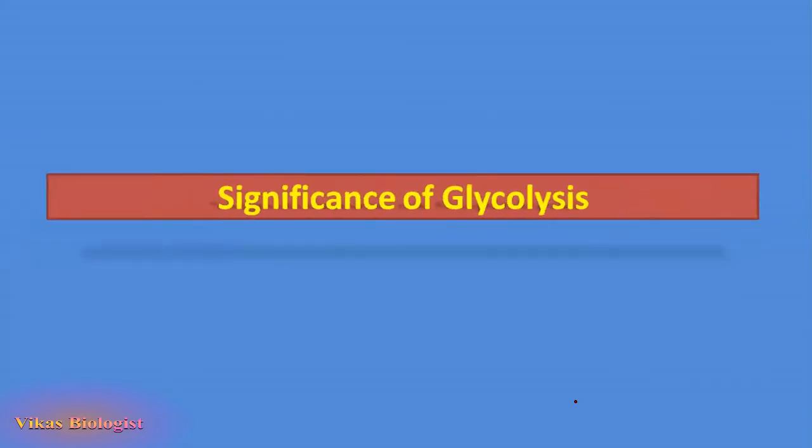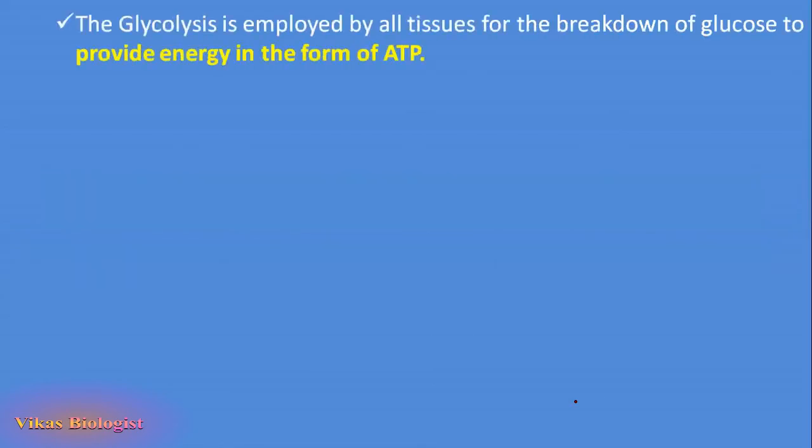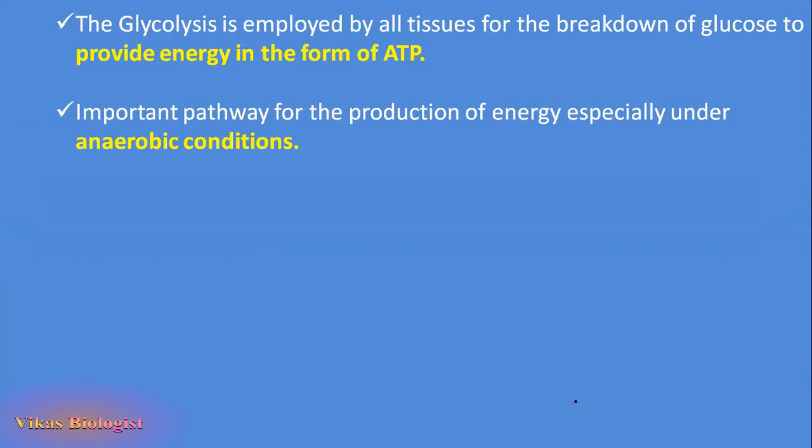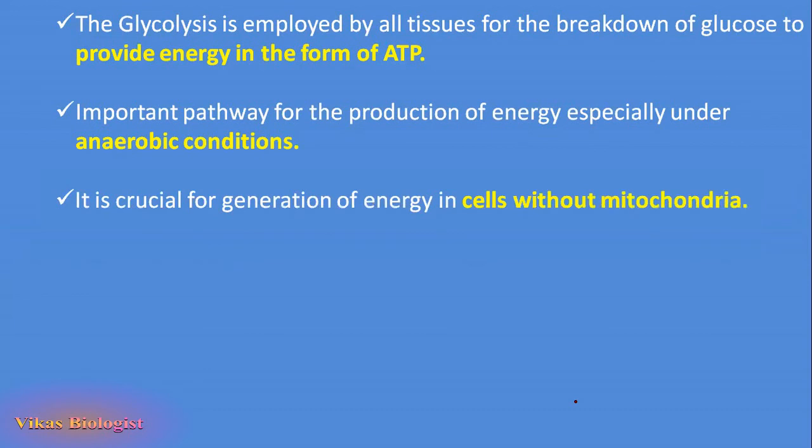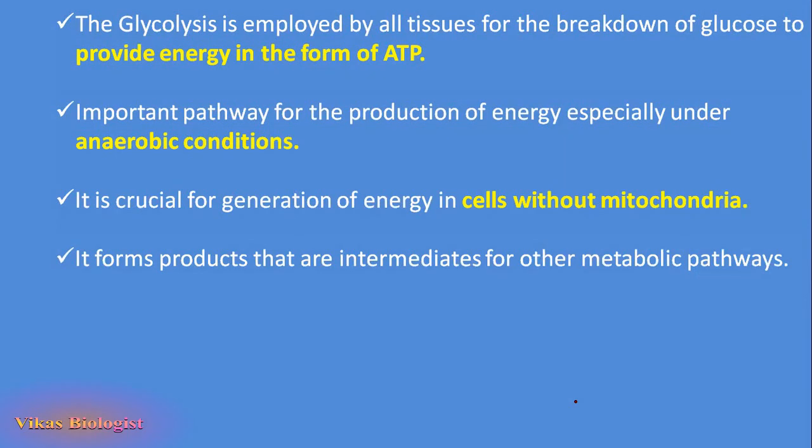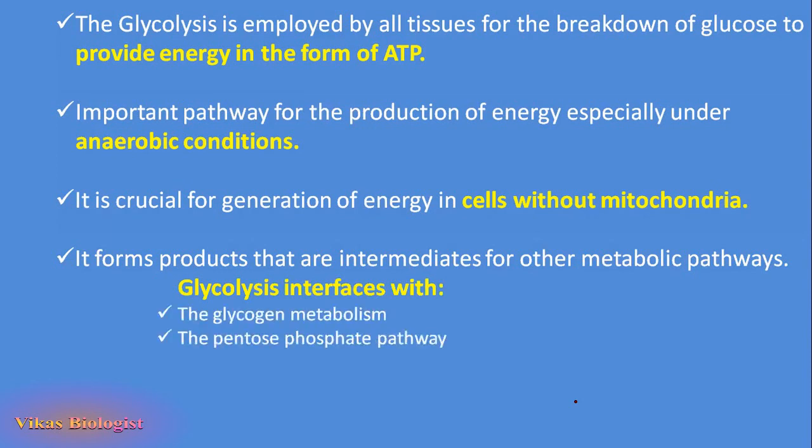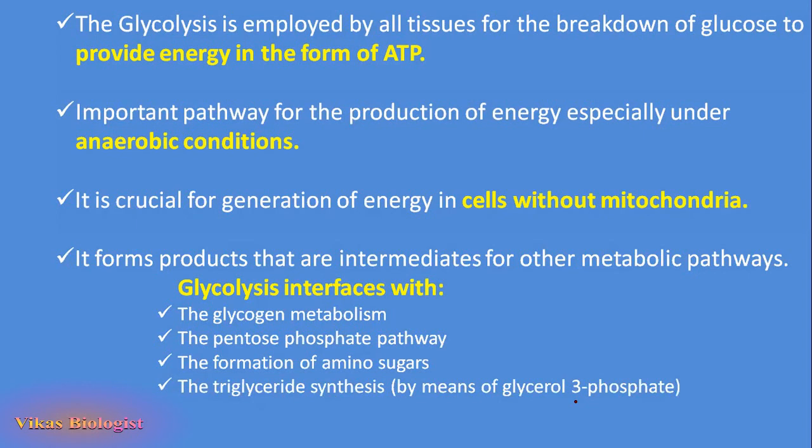Let us look into the significance of glycolysis, why it is so important. It is employed by all tissues for the breakdown of glucose to provide energy in the form of ATP. It is an important pathway for production of energy especially under anaerobic conditions. It is crucial for generation of energy in cells without mitochondria. It forms products that are intermediate for other metabolic pathways. Glycolysis interfaces with glycogen metabolism, the pentose phosphate pathway, the formation of amino groups, the triglyceride synthesis by means of glycerol 3-phosphate, the production of lactate, and transamination with alanine. All these processes interface with glycolysis.